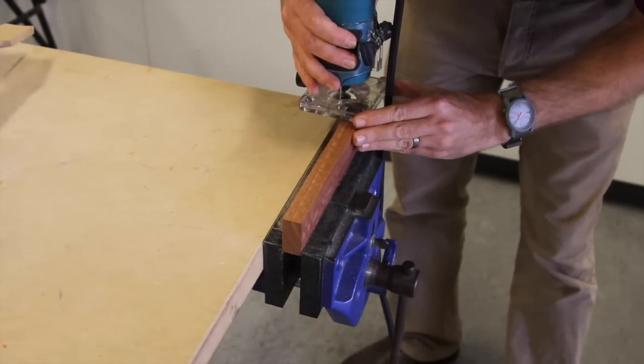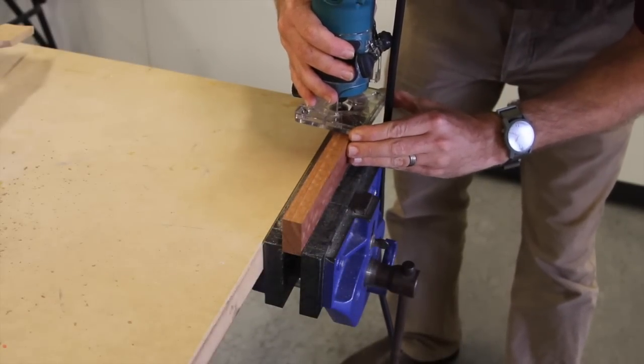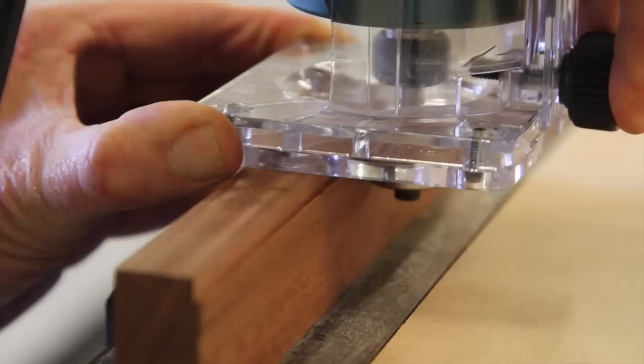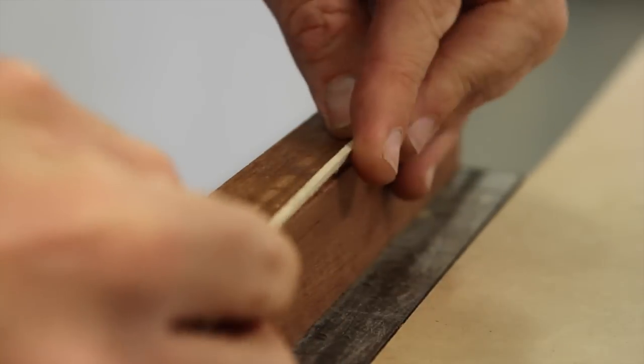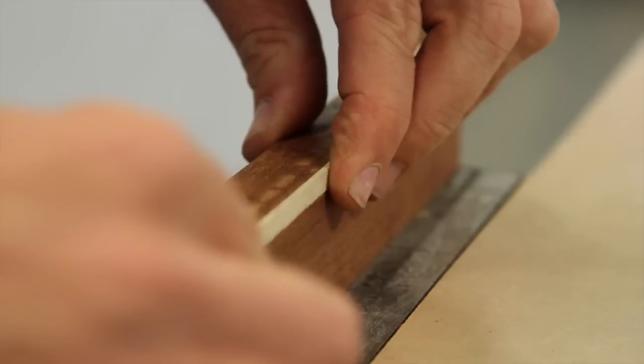Any time you've adjusted the trimmer, I would suggest testing it out on a scrap bit of material before you use it on your actual workpiece. If you're happy with the cut and the binding fits well, you can start work on your ukulele.